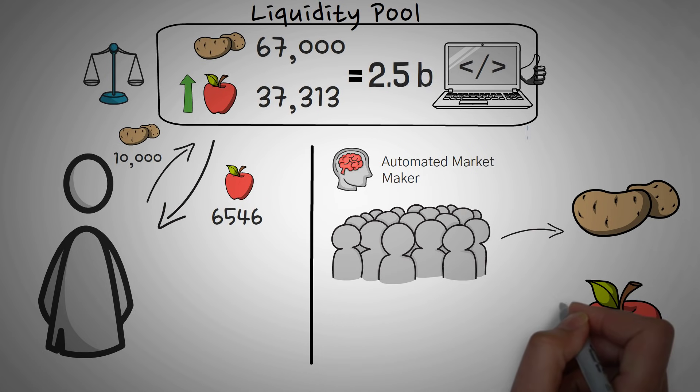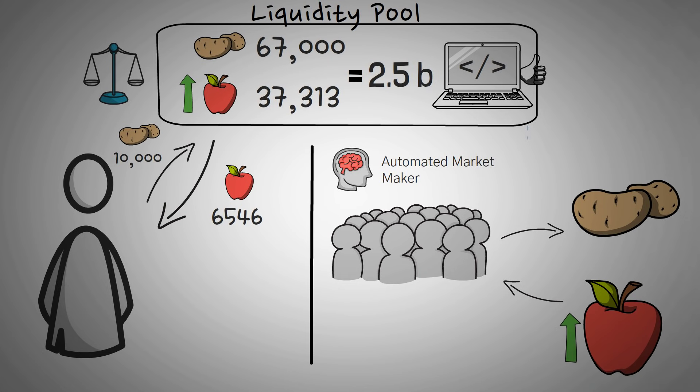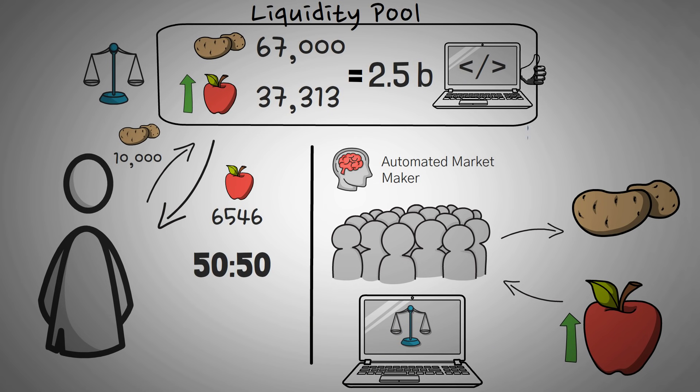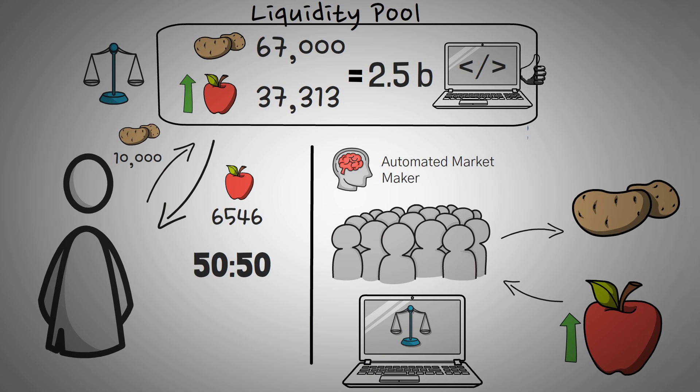As someone buys more and more of something, the price goes up. The apples are costing more because there's less of them. And when it comes to pricing, the algorithm always wants the value of what it is holding to be 50-50. So if you multiplied the price of each asset by how many assets were total in the liquidity pool, the total would still be $50,000 worth of apples and $50,000 worth of potatoes.